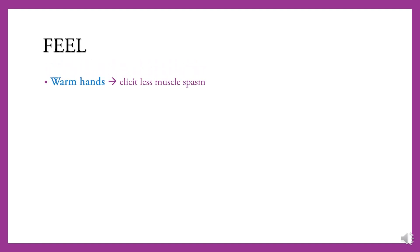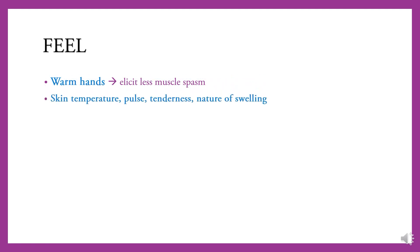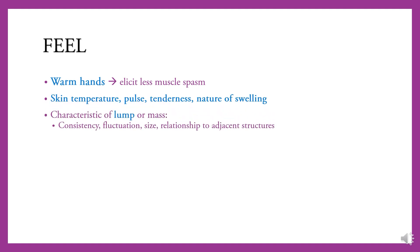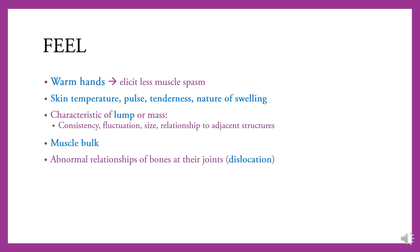For palpation, use warm hands. Elicit local muscle spasm, skin temperature, pulse, tenderness, nature of swelling, and characteristics of any lump or mass — including consistency, fluctuation, size, and relationship to adjacent structures. Also assess muscle bulk, abnormal relationship of bones at their joints or dislocation, and during movement assess crepitus, muscle tone, and atrophy.